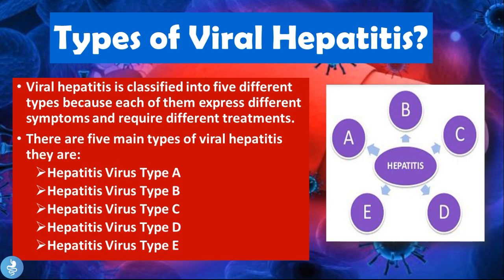In today's video we are going to focus on a specific type of viral hepatitis caused by a specific virus. Viral hepatitis is classified into five different types because each one expresses different symptoms and requires different forms of treatment. The five main types are hepatitis virus type A, B, C, D, and E. Today we are going to focus on viral hepatitis A, also commonly known as Hep A.